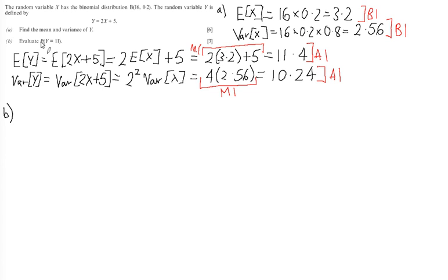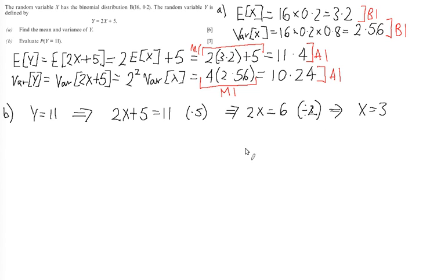Part B. Part B wants us to evaluate the probability Y equals 11. Well, we don't have the distribution in terms of Y, but what we do have is the distribution in terms of X. So in other words, what we're trying to find is the probability that 2X + 5 equals 11. Or if we solve this equation, the probability that 2X is equal to 6. Dividing by 2, what we're looking for actually is that X is equal to 3. So all we have to do is solve the linear equation for Y equal to 11 to find what X is actually equal to. So I'm calculating the probability that X is equal to 3, in fact.